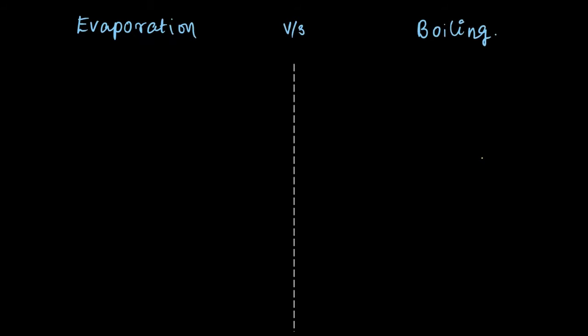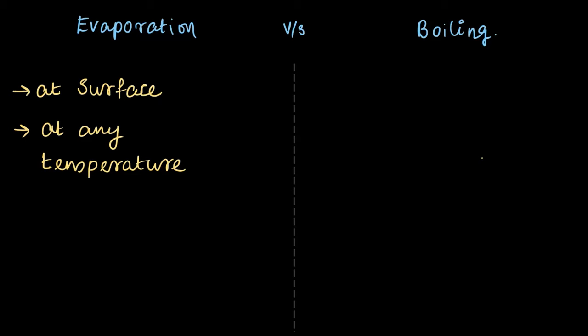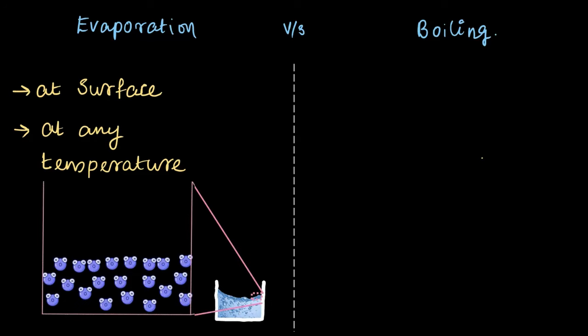To understand why there is water vapor in the air even when it's not 100°C, we need to look at a process called evaporation and understand how it is different from boiling. Evaporation is when water molecules escape from the surface of the water, and it can happen at any temperature — not just 100°C. At any temperature, some of these molecules have enough energy to break from the liquid and become vapor.